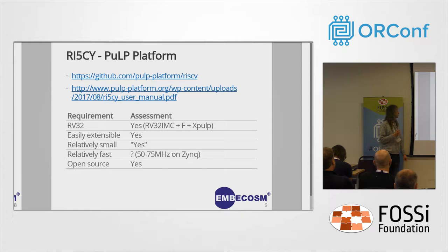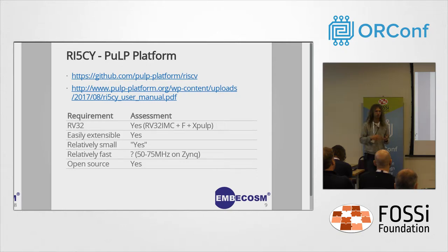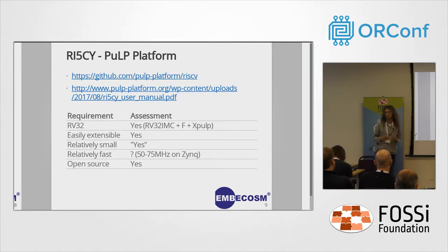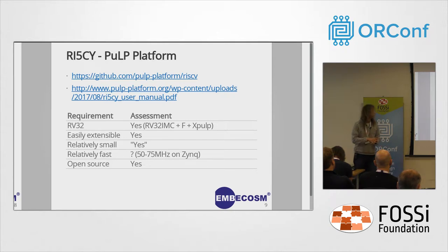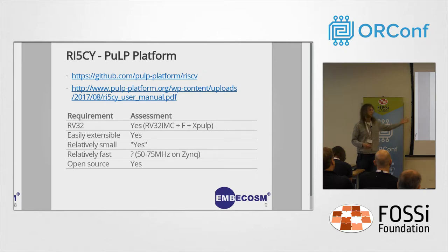The RISC-V core from the PULP platform met most of those requirements as well. It seems relatively small, though I haven't given a concrete definition of what small means. At the time of the survey, we knew it had been run at about 50 or 75 MHz on a Xilinx Zynq — I believe it can go faster than that. It's open source as well.